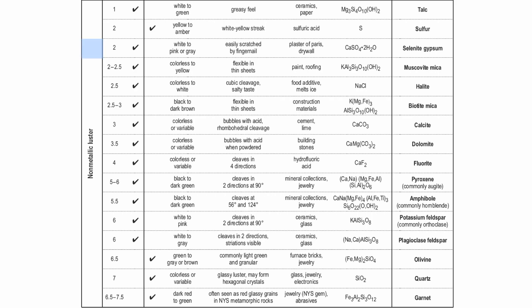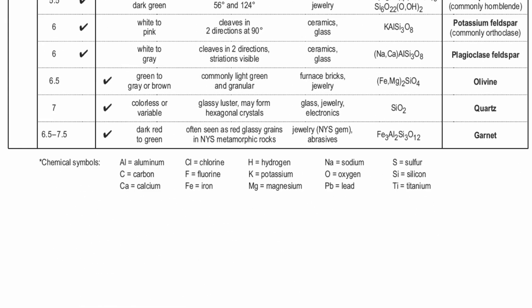For instance, if you want to find the mineral that has a non-metallic luster, a hardness of 2, and is used for plaster of Paris or drywall — that's going to give you the mineral selenite gypsum. It's just a big scavenger hunt throughout. Getting back to chemical composition, you never have to memorize the individual elemental names because they're all given to you at the very bottom. Other than that, we're pretty much completed here. Good luck — we'll talk to you soon.